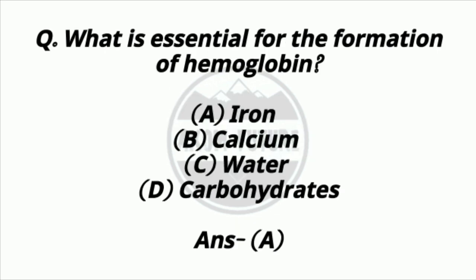Question 20. What is essential for the formation of hemoglobin? Option A: Iron. Option B: Calcium. Option C: Water. Option D: Carbohydrates. Answer: Option A — Iron.